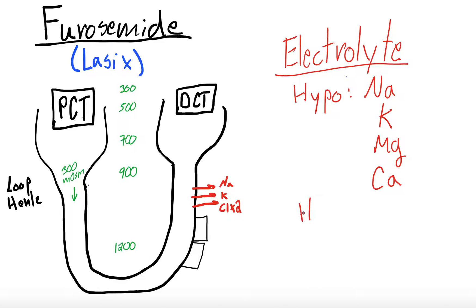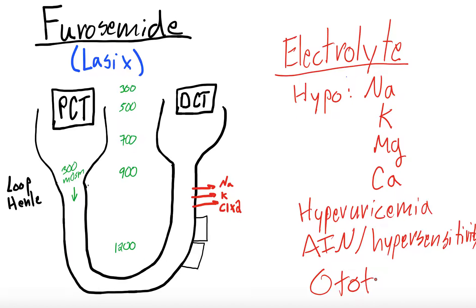Additional adverse effects are hyperuricemia. It is actually a sulfonamide, so you can get acute interstitial nephritis or hypersensitivity. And you can also get ototoxicity. This is often reversible, though. Okay. So, I wanted to leave electrolytes underlined because we're going to use these to help understand the mechanism of action of Lasix.